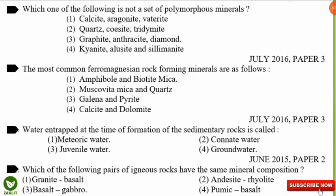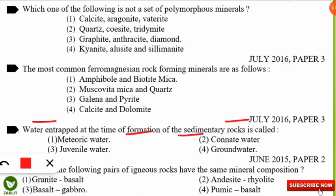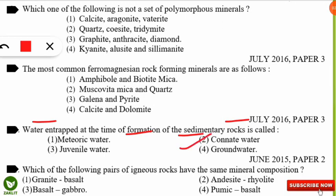The next question is: water trapped at the time of formation of sedimentary rocks is called what kind of water? This is a frequently asked question. The correct option is option 2 — connate water is the water which is entrapped at the time of formation of sedimentary rocks.